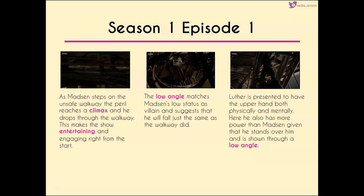As Madsen steps out onto the unsafe walkway, the audience knew this was going to happen — he drops through the walkway. This is one of the ways the show is entertaining, engaging right from the start. We have that same low-angle matching Madsen's low status, also suggesting he's going to fall just as the walkway did. Luther is presented with both the upper hand physically and mentally, standing over Madsen; the low angle makes him seem more powerful and dominant.